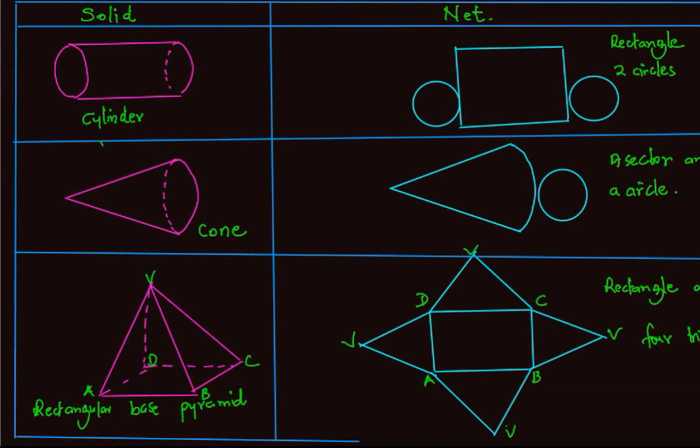For solids that do not have cuboidal, that do not have rectangular or square or triangular faces, like a cylinder, its net will be a rectangle and two circles. The rectangle represents the curved part of the cylinder.